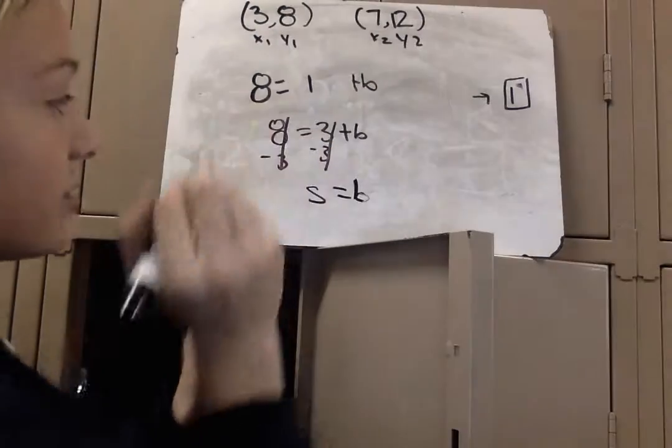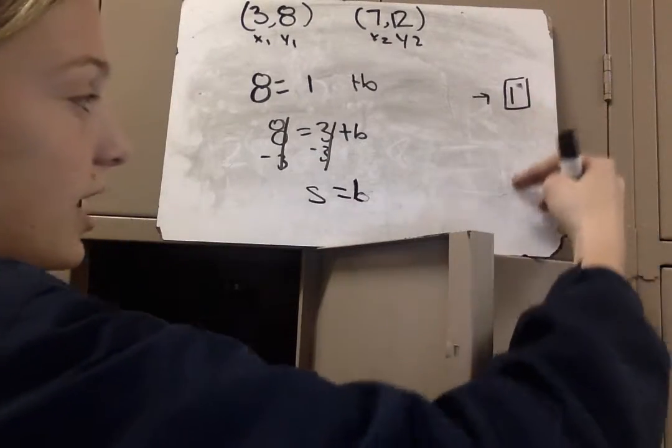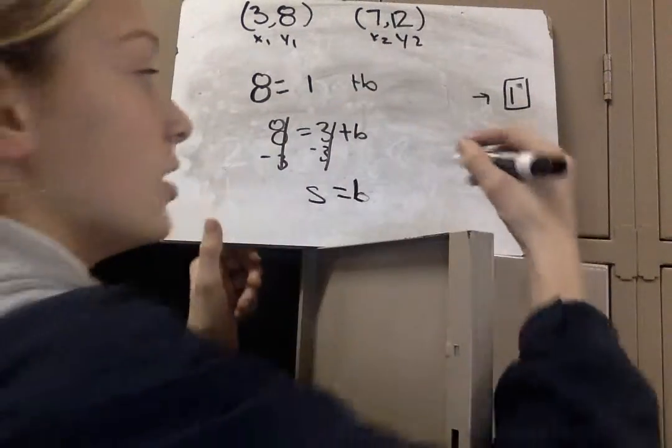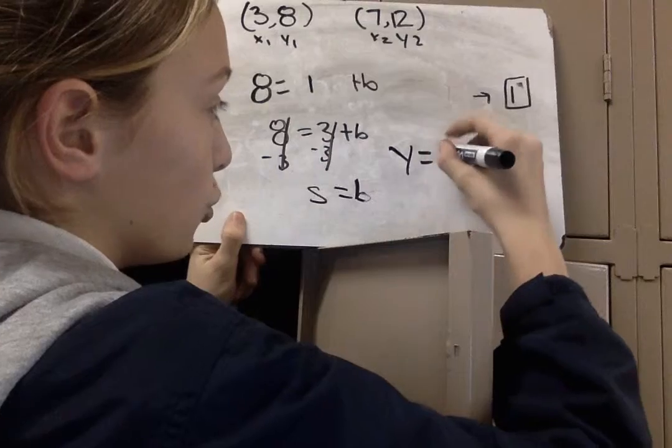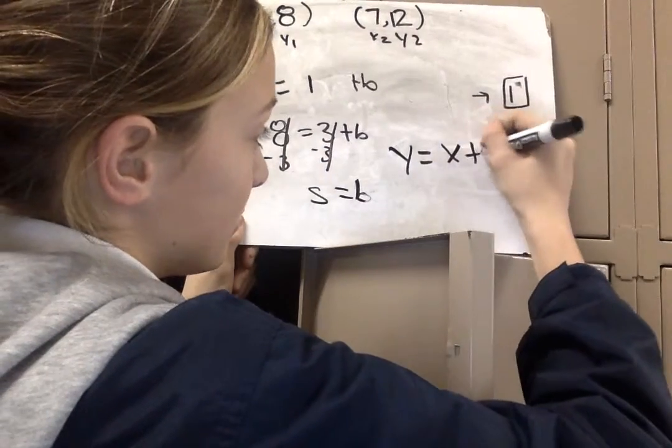5 equals b. So, now we're going to write our equation with our slope, which is 1, and our y-intercept, which is 5. So, y equals 1x, or x to simplify that, plus 5.